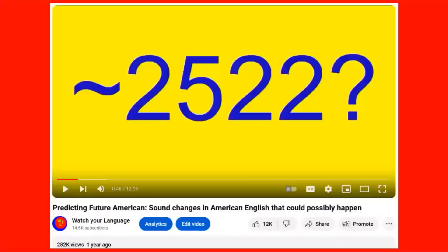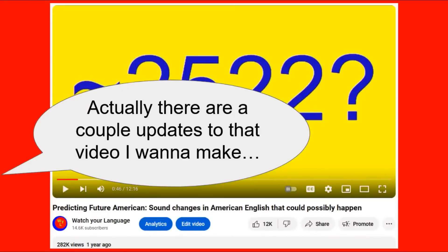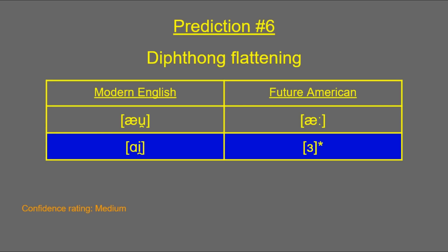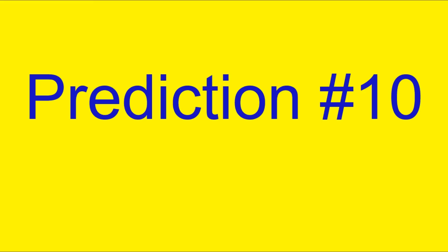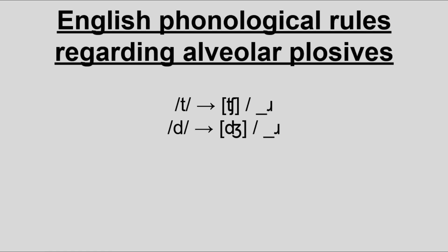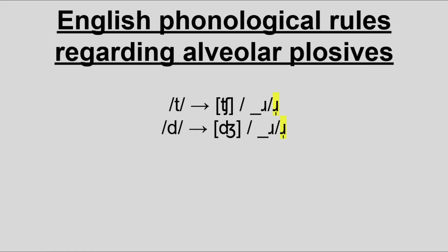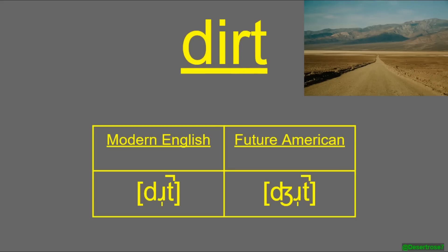Before I get into all that, I'm gonna make some updates to the Future American video. First off, one of my opinions has changed — the result of the eye diphthong flattening. Back then I said it would become the open mid central unrounded vowel A, but now I feel more like it'll become the open front unrounded vowel A. In addition, there's another sound change I wasn't sure enough to include before but now I am: the allophone where D and T become J and CH before R, which I now see extending to before syllabic ER as well, like in 'churn' or 'jurt,' which didn't used to happen.